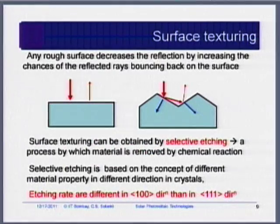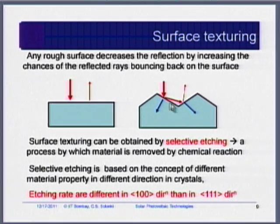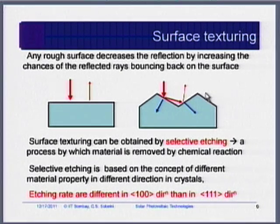One way to minimize reflection is to put anti-reflective coating. You also find anti-reflective coating in sunglasses. Wherever you want to minimize reflection, you should have anti-reflective coating. Another way to minimize reflection is texturing — making your surface rough.